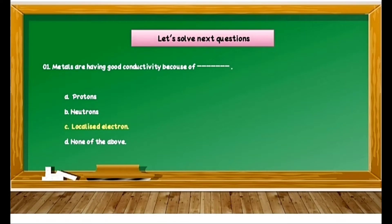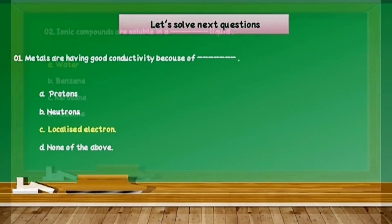Question: Metals are having good conductivity because of dash dash. Options are: A) protons, B) neutron, C) localized electrons, D) none of the above. We know that metals are good conductors of heat and electricity. The reason behind that is the electrons present in metal are able to bond, and due to that reason they have good conductivity of heat and electricity. The bonding electrons are nothing but localized electrons. Therefore, the answer of this question is C, localized electrons.